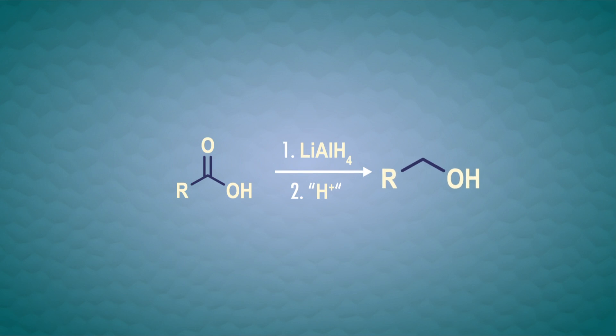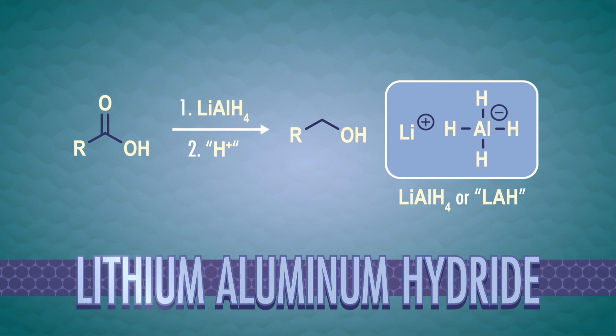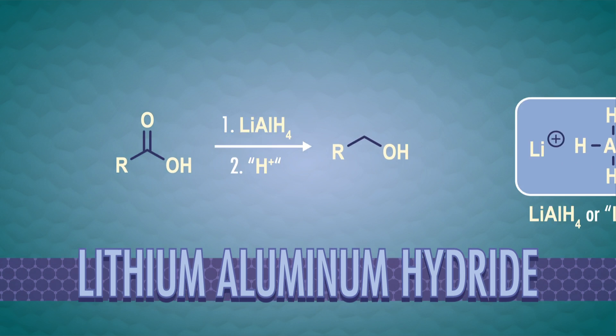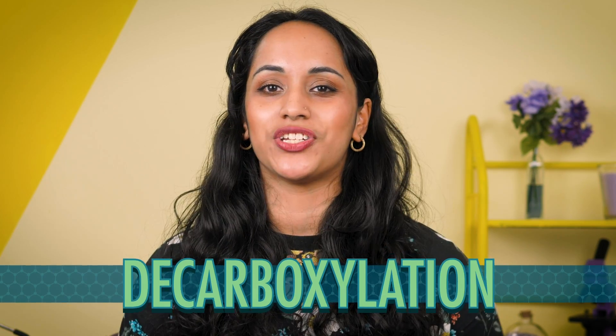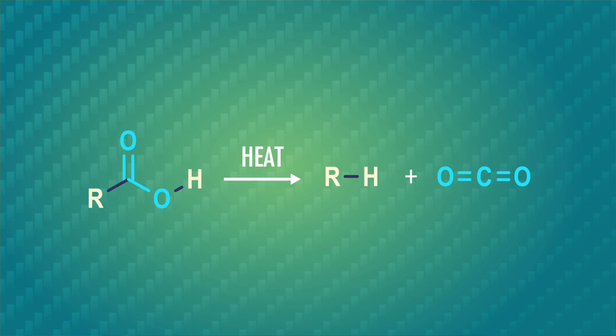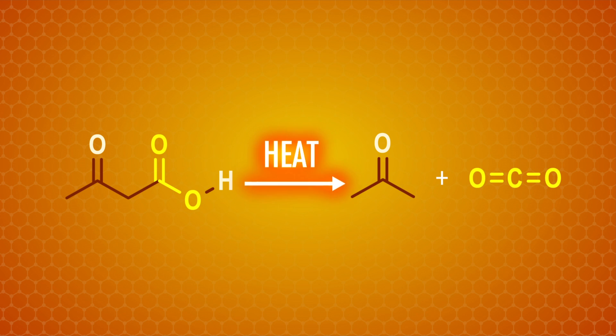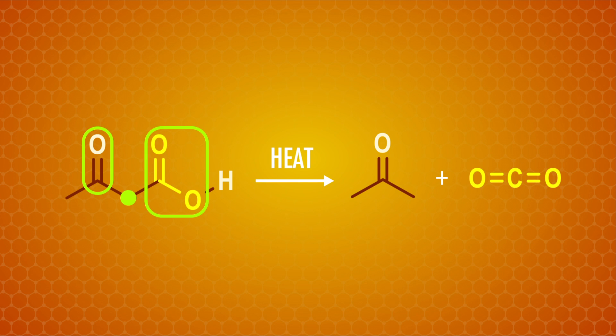Before we tackle that problem, let's look at some other reactions carboxylic acids can undergo. If we want to get back to an alcohol from a carboxylic acid, we can use a reducing agent such as lithium aluminum hydride. This is a powerful reducing agent, so after the reaction, we add a proton source very carefully to react any unreacted lithium aluminum hydride and give our alcohol a proton back. Another way to remove the carboxylic acid group has a very straightforward name – decarboxylation. This involves heating the carboxylic acid and replaces the carboxylic acid group with a hydrogen atom. This reaction happens really easily when you heat compounds that have a carbonyl group one carbon away from the carboxylic acid group.